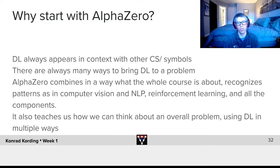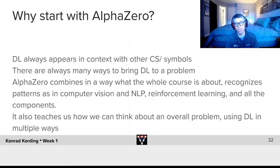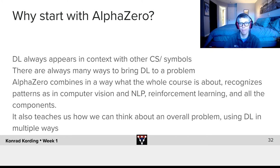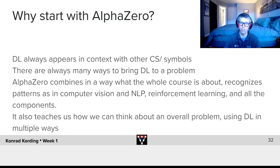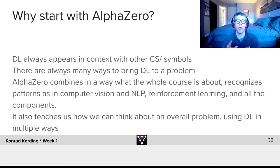Alpha Zero combines what the whole course is about. It combines recognizing little patterns that predict that your game situation isn't as good as you may believe. In that sense, it's similar to computer vision and natural language processing. It contains reinforcement learning, and of course it contains all the components like transfer functions, optimizers, regularization, and so on. I think it also teaches us how we can think about an overall problem and how we can use deep learning as a tool in multiple different ways.